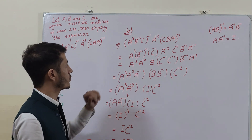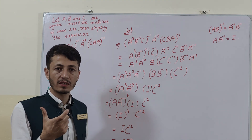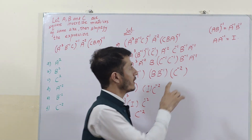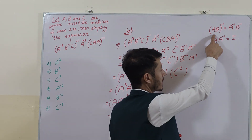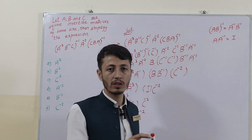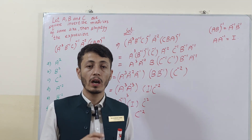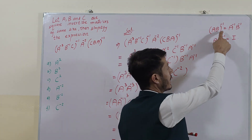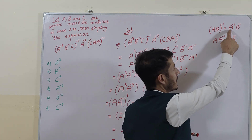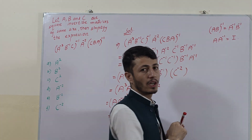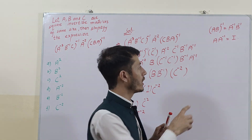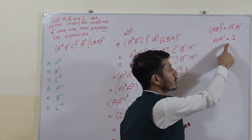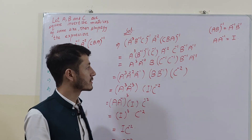Two concepts of matrices and determinants are used here. First, if two matrices are multiplied and the whole inverse is taken, and they are invertible matrices, we can write A inverse and B inverse. Also, if a matrix is multiplied with its inverse, it gives us the identity matrix.